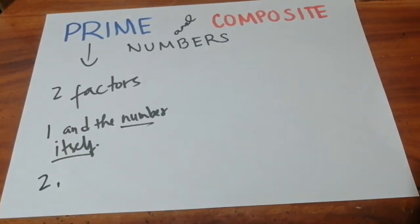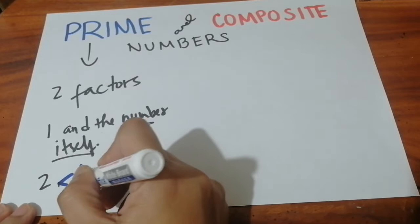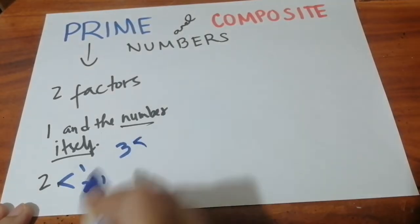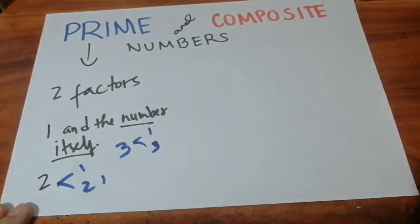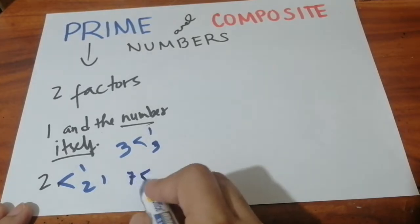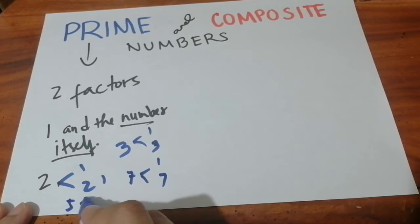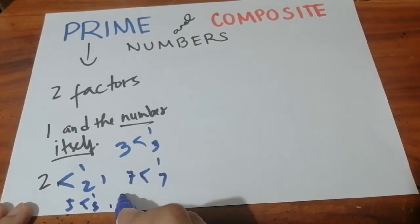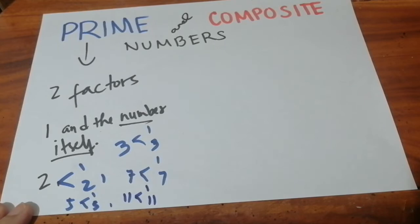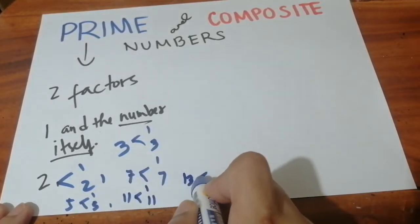Two is the smallest prime number. The factors of two are one and two — no other factors. Another is three. Three is also a prime number because the factors of three are only one and three. Next is seven — factors of seven are one and seven. For five, it's also one and five. Another is eleven — the factors of eleven are only one and eleven.